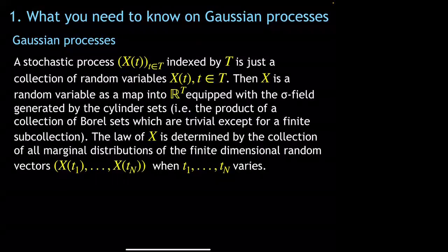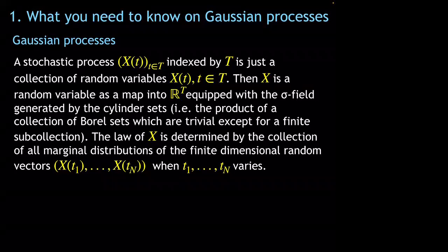First, I would like to say some words about Gaussian processes. A Gaussian process in full generality is a collection of random variables where the parameter t belongs to some abstract set of parameters T. This is equivalent to considering a random variable as a map into R to the power T, equipped with the sigma field generated by the cylinder sets — a collection of products of Borel sets which are trivial except for a finite number of them.